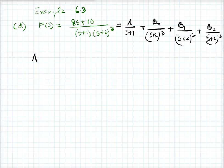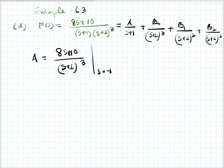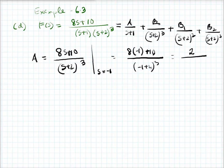Finding A is straightforward. You multiply by (s+1), which gives you (8s+10) over (s+2) whole cube, and then replace s by minus 1. This gives you (8×(-1)+10) over (-1+2)³ = (-8+10) / 1 = 2. So A equals 2.